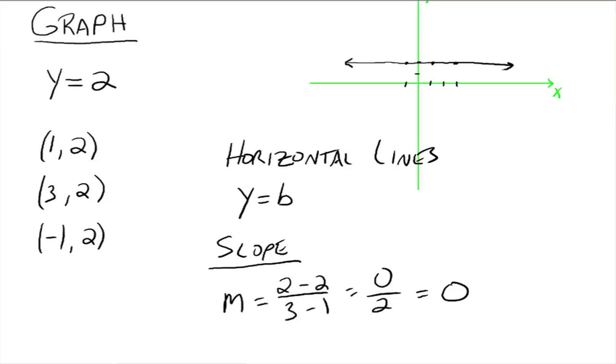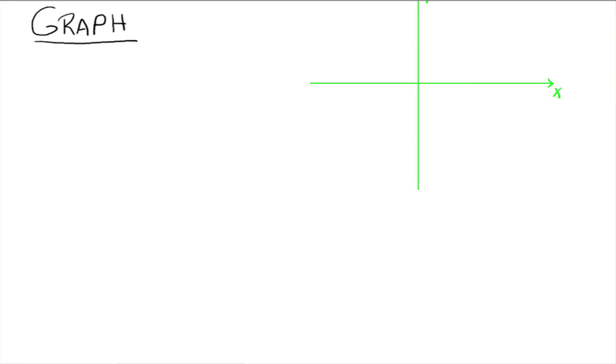So let's look at this one. Let's graph x equals negative 3. This time we've got the y that's missing. So that means y could be anything that it wants to be, but what does x have to be? The x values all have to be negative 3.